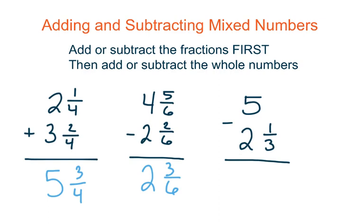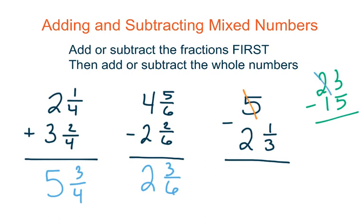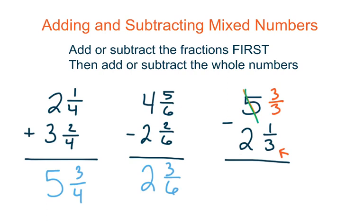Now for this next problem, when we're subtracting 5 wholes minus 2 and a third, there is no fraction here — we're missing our fraction. When we're taking away a fraction there has to be a fraction to subtract from, so we need to create one by borrowing from our whole. Our whole is 5, and we borrow just like we would in regular subtraction — for example, borrowing from the tens place. Here we're borrowing one whole, so we need to identify what one whole equals as a fraction. The denominator is 3, which means one whole equals 3 thirds, and our 5 becomes 4.